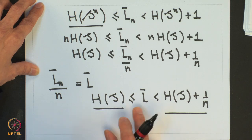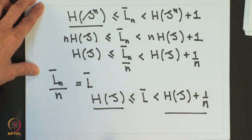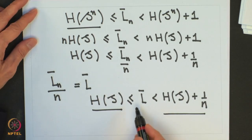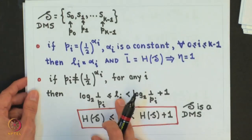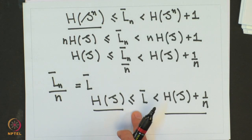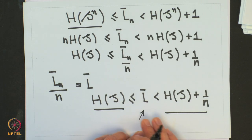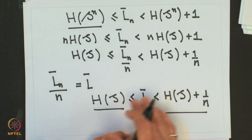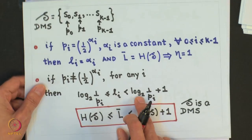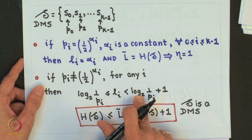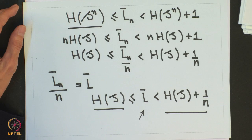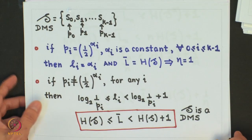But the price we pay for this is that the coding complexity will increase because of the large number of symbols in the nth extension of the source. It is also important to know that this strategy of choosing the lengths for the codeword does not tell us what the value of L̄ actually is. Another thing is that it does not guarantee that if I choose my codeword lengths as per this strategy, the code I get will have the minimum average length. Let us take a simple example which will serve to show that this choice may indeed provide a poor way to choose the codeword lengths.